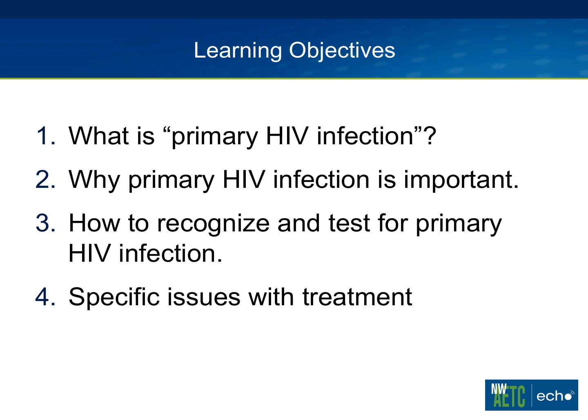What is primary HIV infection? We typically say it's the period when people first are diagnosed with HIV, from the point of HIV acquisition until some arbitrary point about six months later. It gets divided into two periods: acute and early HIV infection. Acute infection is from acquisition until antibodies are detected, and early infection is from antibody development to that arbitrary point about six months later when the immune system is mature.